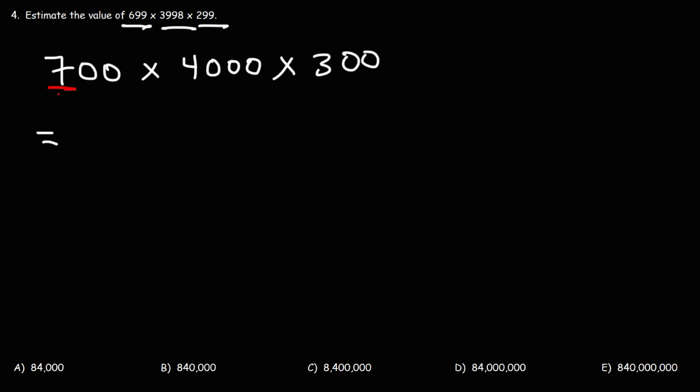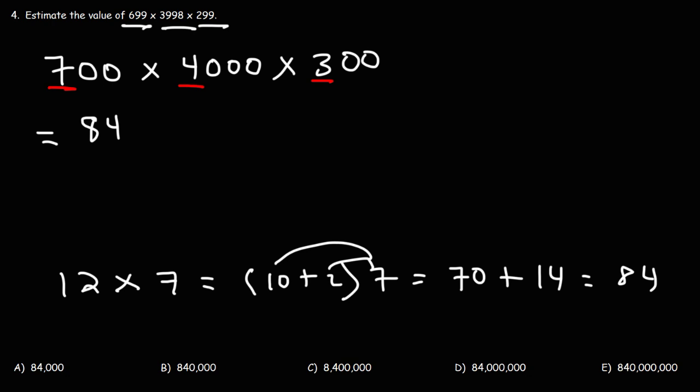We're going to multiply these numbers. 4 times 3 is 12. And then 12 times 7. What's 12 times 7? Well, you can think of 12 as being 10 plus 2. 10 times 7 is 70. 2 times 7 is 14. So, 70 plus 14 is 84. So, let's write 84 as the first part of our answer.